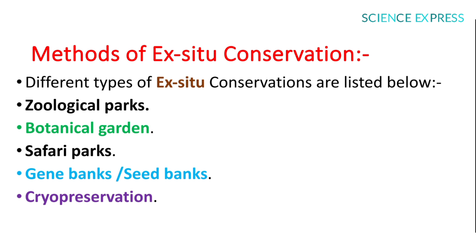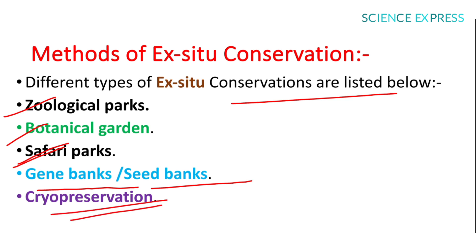Methods of ex-situ conservation include: cryopreservation at minus 196 degrees centigrade in liquid nitrogen, which can maintain tissue culture, embryos, animal cell tissue, and gametes indefinitely. Cryopreserved material is revived through special techniques when required. Other methods include zoological parks, botanical gardens, safari parks, and gene banks or seed banks.